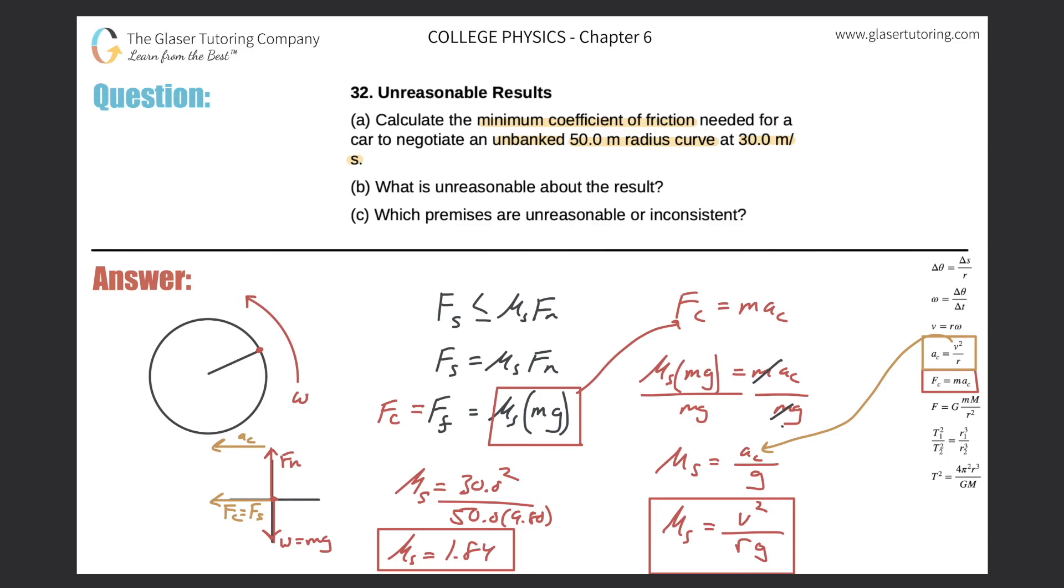Okay, great. Now letter B: What's unreasonable? Well, I think if I remember correctly, the value of static friction coefficient for rubber on concrete was somewhere around 1. So this coefficient is almost twice as large as what in reality it is, so that's kind of unreasonable.